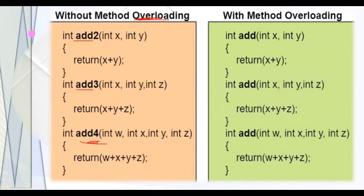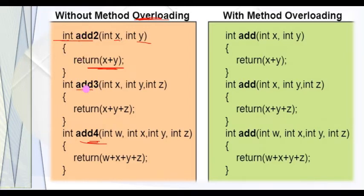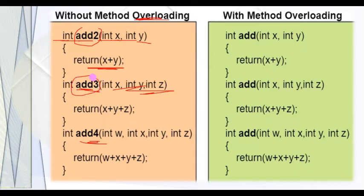This function name is 'add2', and the number of parameters are identified as integers X and Y. The function name is 'add2'. Now this function name and this function name are different. The parameters are X and Y for add2, and X, Y, and Z for add3. Finally, X plus Y plus Z. Another function created is add3.